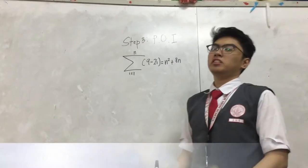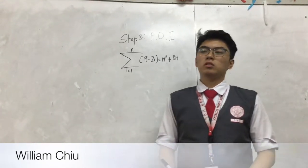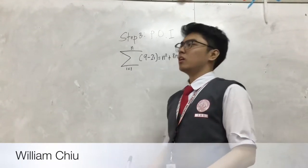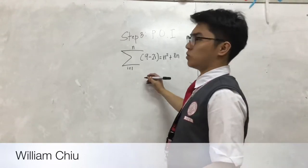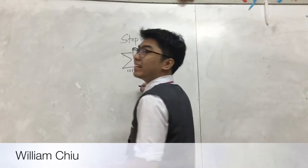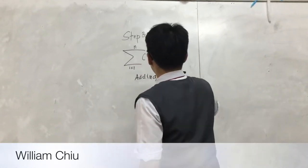For the third step, or the proof of induction, in order to prove that the equation is true we must substitute or add the next terms. First we have two parts: adding the next terms and substituting k plus 1.